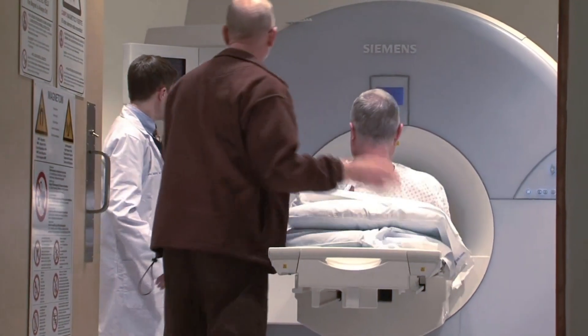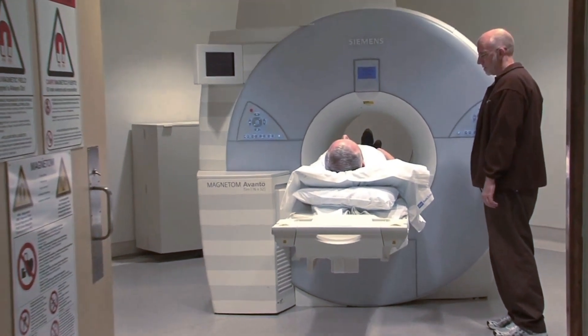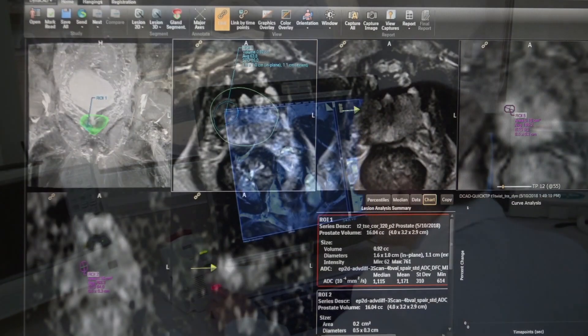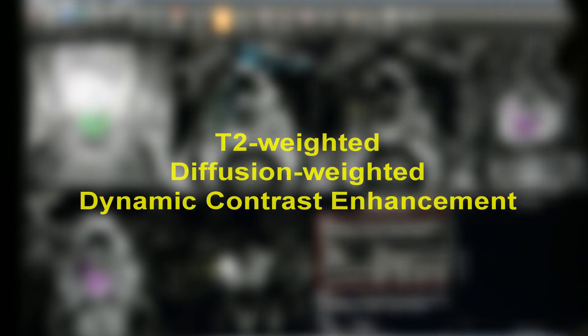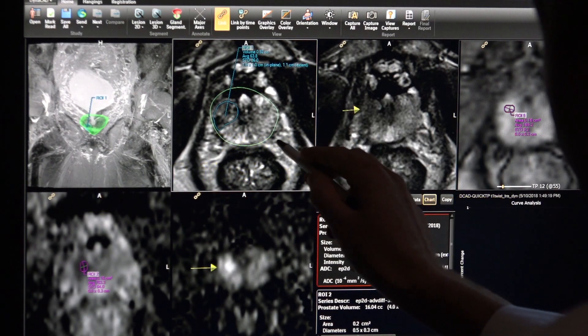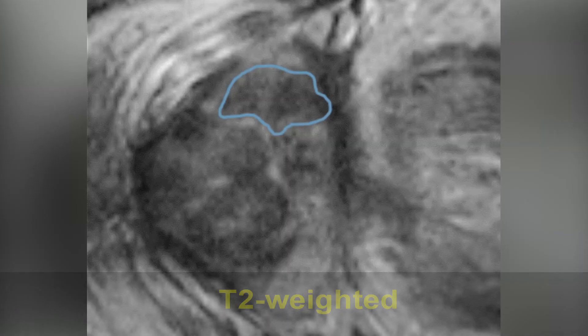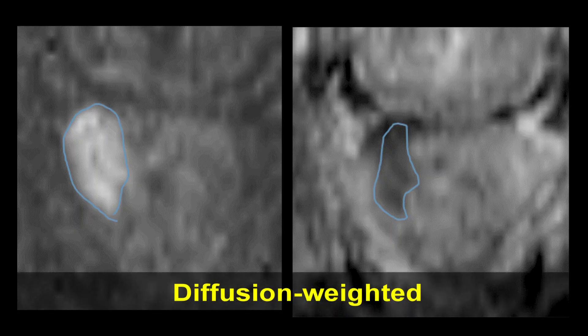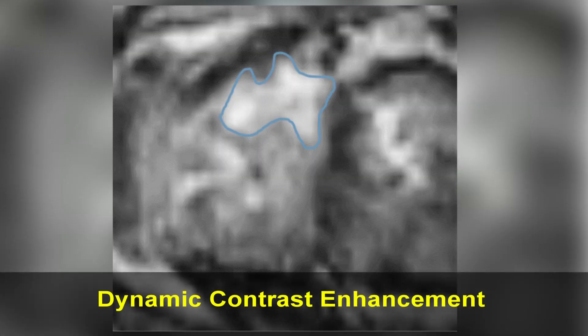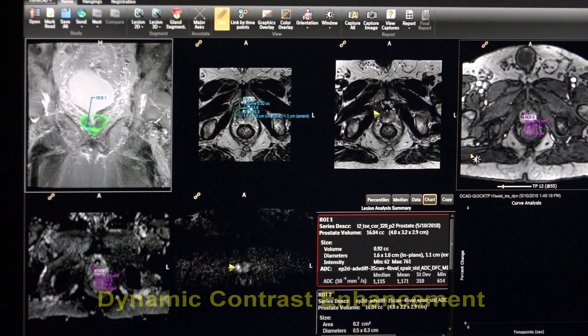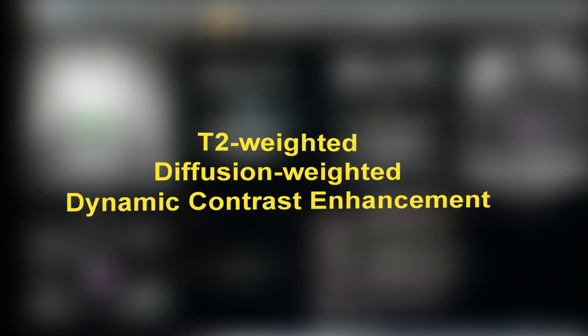Planning focal therapy actually begins with a multi-parametric MRI, which allows visualization of cancer within the prostate gland. The three key MRI parameters are T2-weighted imaging, diffusion-weighted imaging, and dynamic contrast-enhanced imaging. T2-weighted imaging is useful to evaluate the lesion margins. Diffusion-weighted imaging allows us to assess cancer aggressiveness, and dynamic contrast-enhanced imaging allows us to evaluate how the lesion enhances. These three key sequences allow the radiologists to assign a PIRADS score to a lesion.